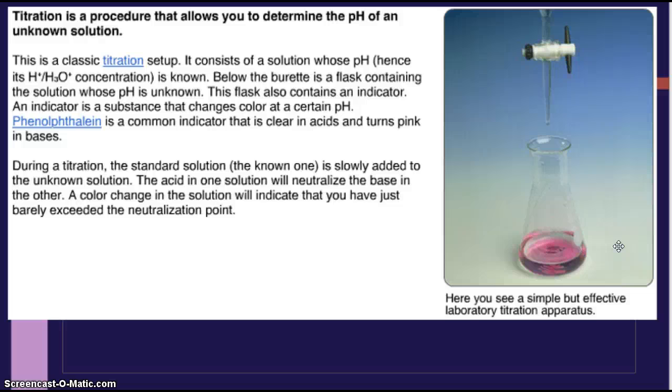During a titration, the standard solution, the known one, is up here in the burette, and it is slowly added to the unknown solution down here. The acid in one solution will neutralize the base in the other. A color change in solution will indicate that you have just barely exceeded the neutralization point. Because in the lab, we started with an acid down here, and when it flashed pink, what did that tell us? That told us that it was just neutral. And then once we added that one extra drop, it stayed pink, and now the solution is a base.